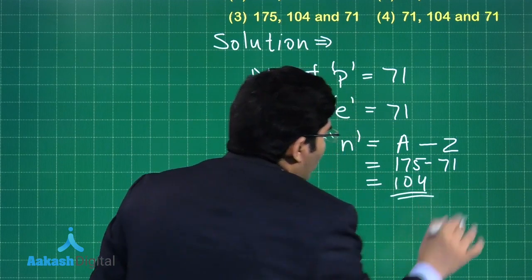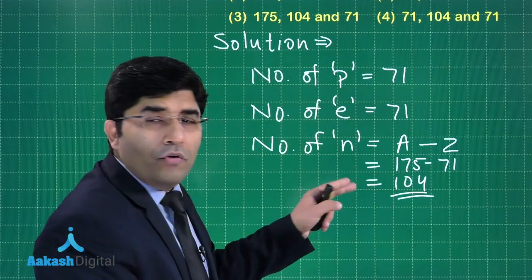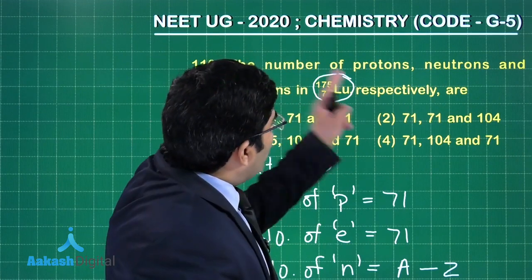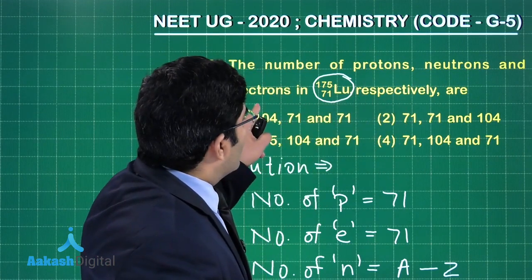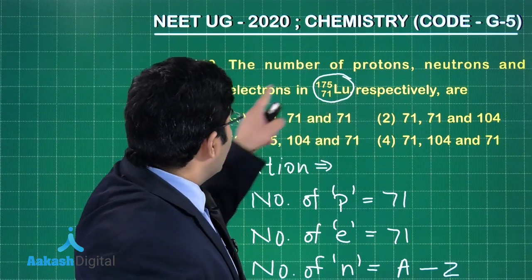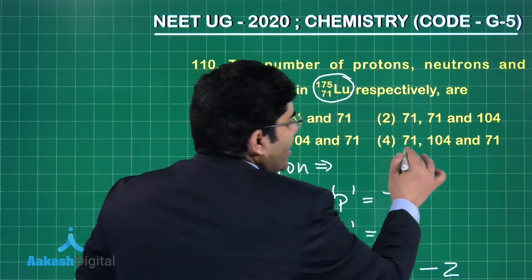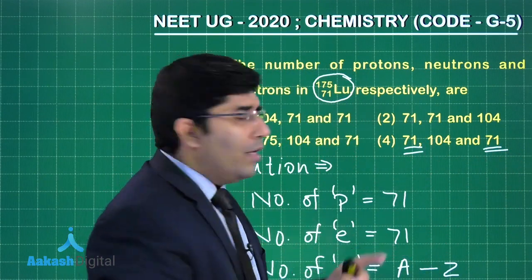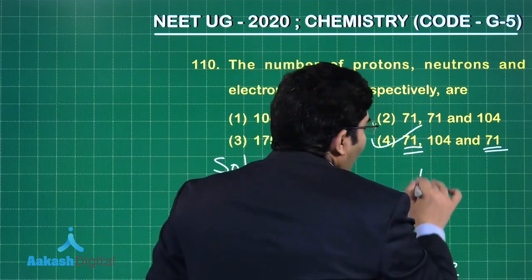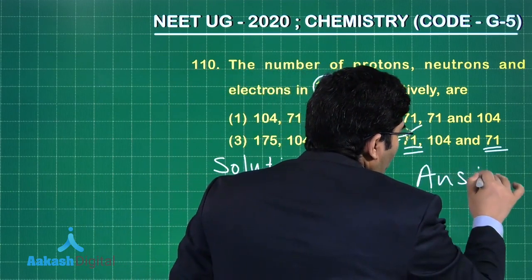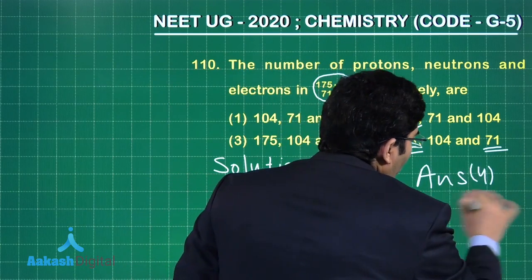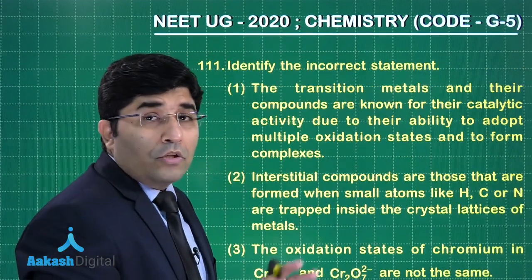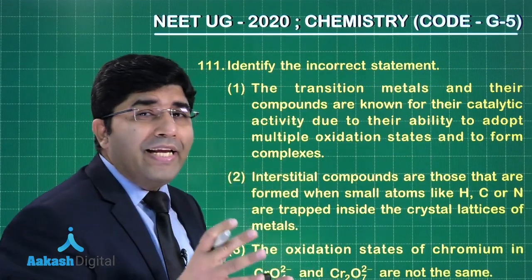So protons and electrons are both equal to 71, and the number of neutrons is 104. Therefore, the correct answer is option number four. Let's move on to the next question.